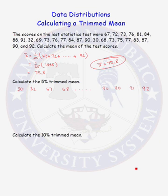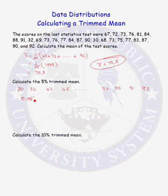Recall that a trimmed mean trims the bottom portion of the data set and the top portion of the data set, and then recalculates the mean. In a 5% trimmed mean, we want to remove 5% of all data values from the low end of the data and 5% from the top end. How many data points should we remove from each end? We want to remove 5% of all data values, so 5% of 25 is 1.25.